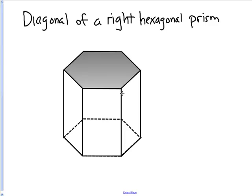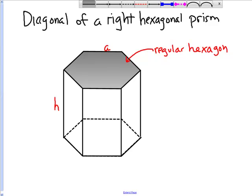In this lesson we're going to learn how to find the length of a diagonal of a right hexagonal prism. Here we have a right hexagonal prism in which the base is a regular hexagon with a side length of a and the prism has a height of h. The longest segment that can be drawn inside a prism is the diagonal, going from one corner to the opposite corner.